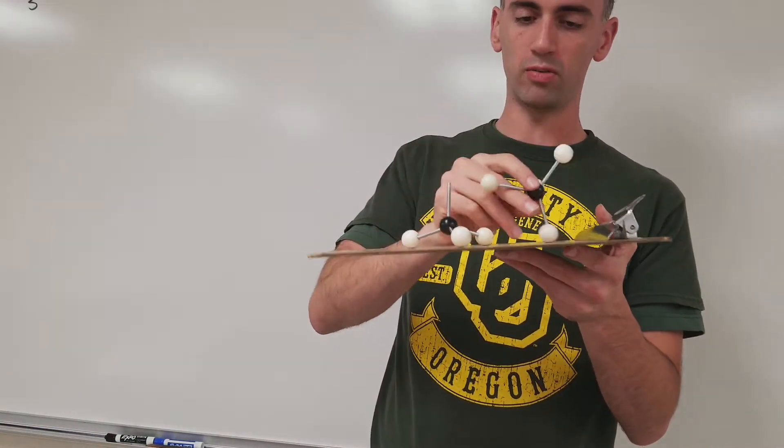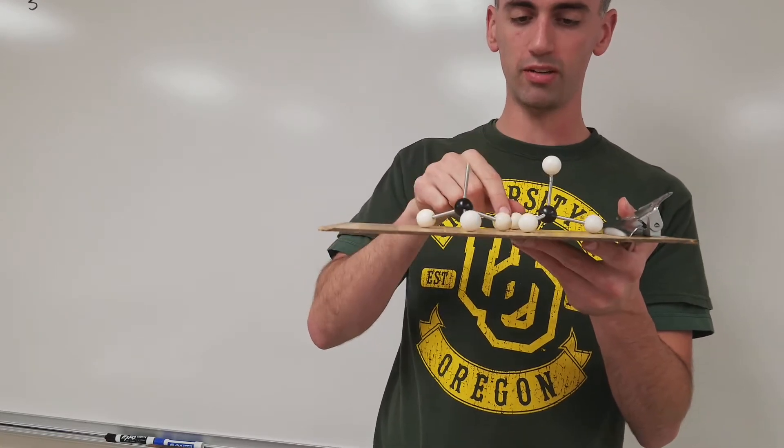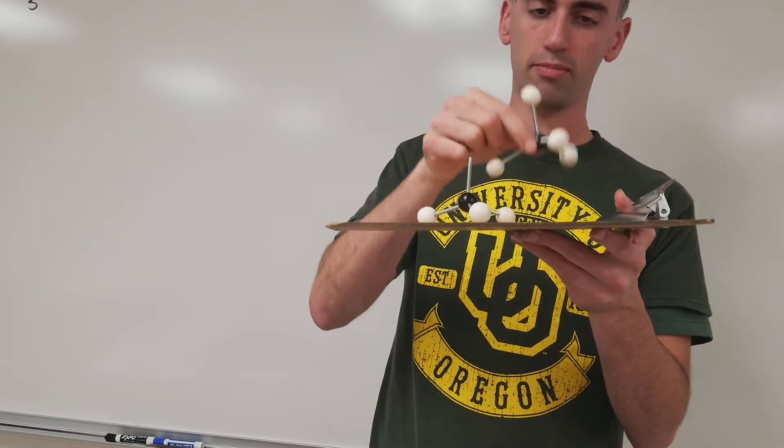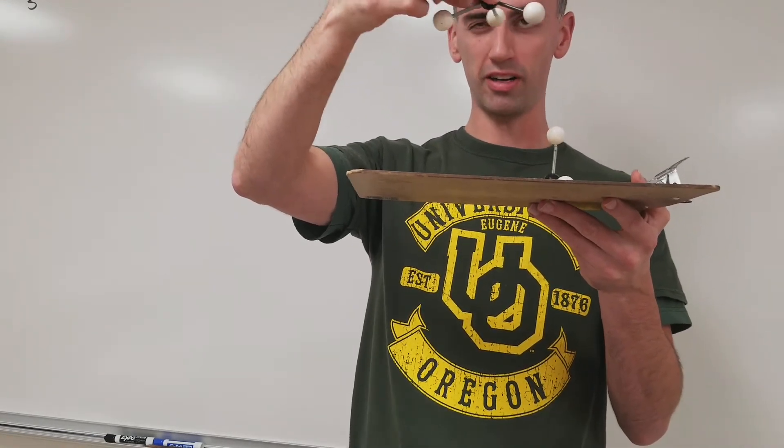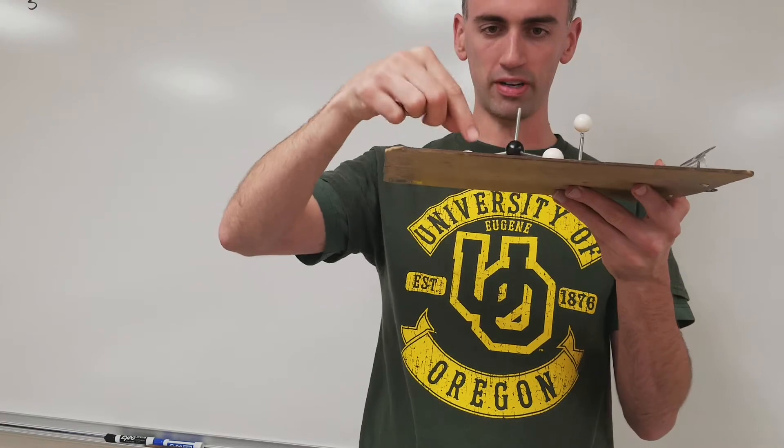There's four atoms sticking off this middle one. This is tetrahedral molecular geometry. That's just the shape made by these four atoms that are bound to it. Here, there's only three atoms bound to it. So the shape here, it's not flat. It's all pointed downward.